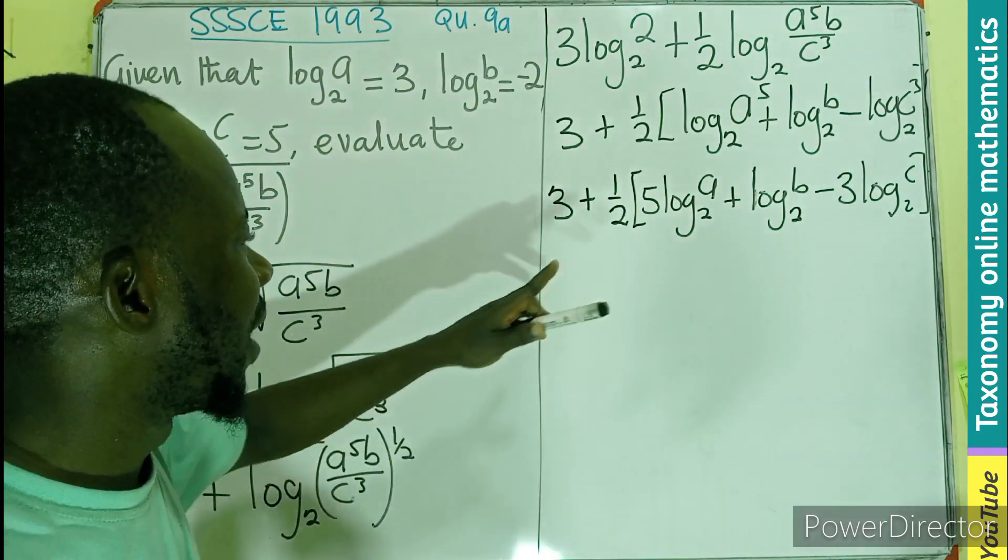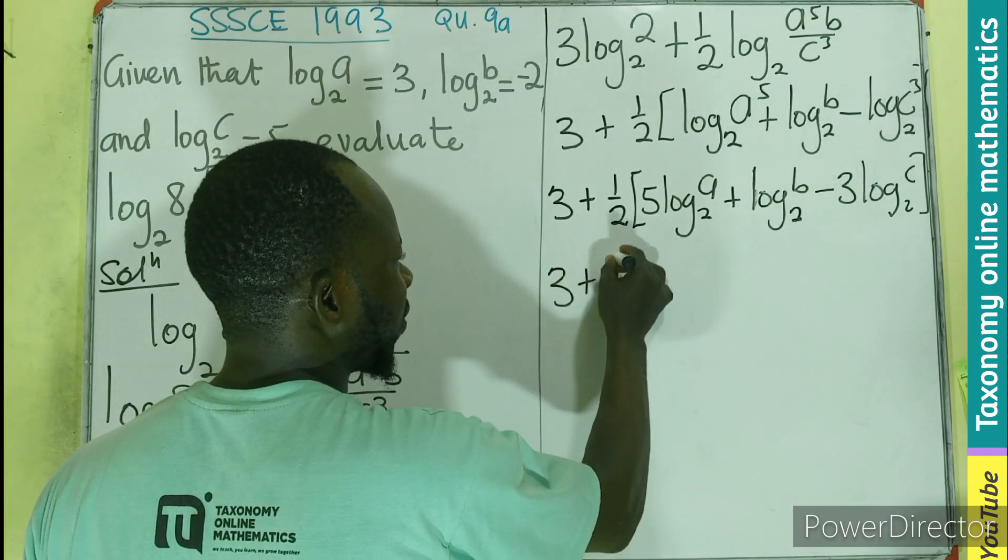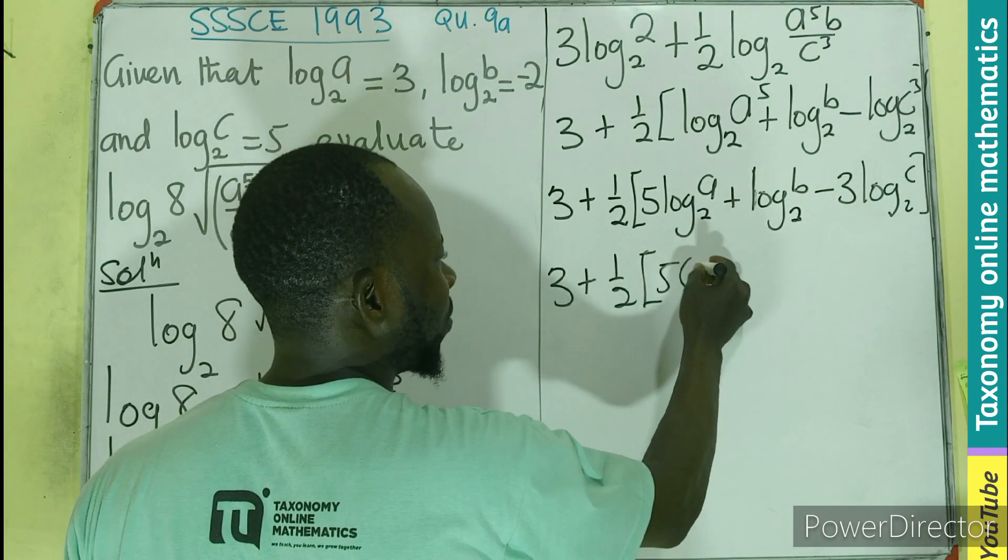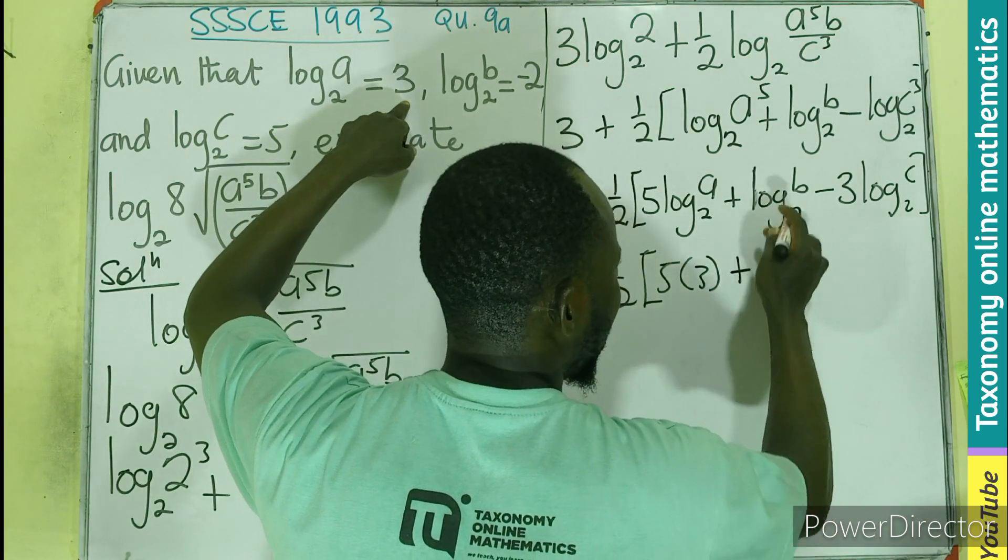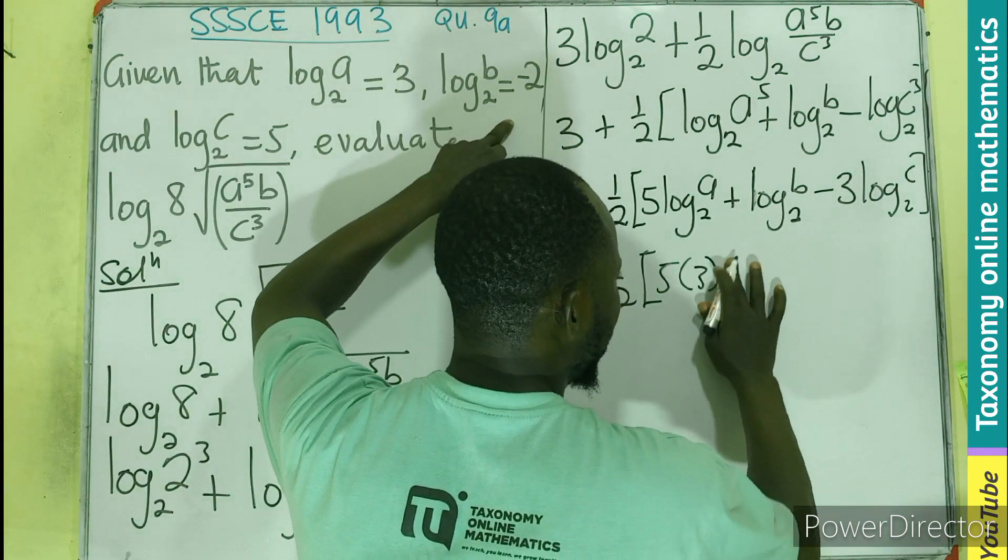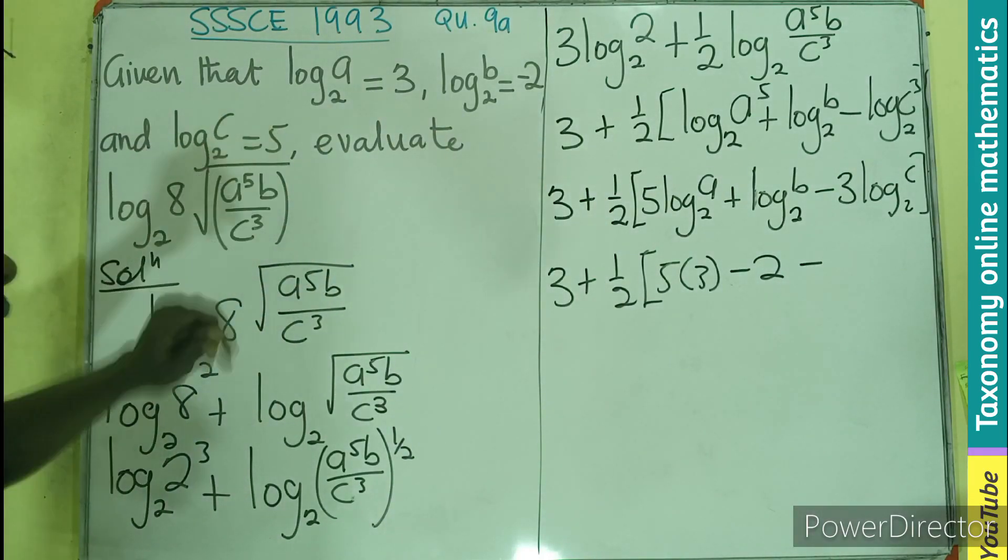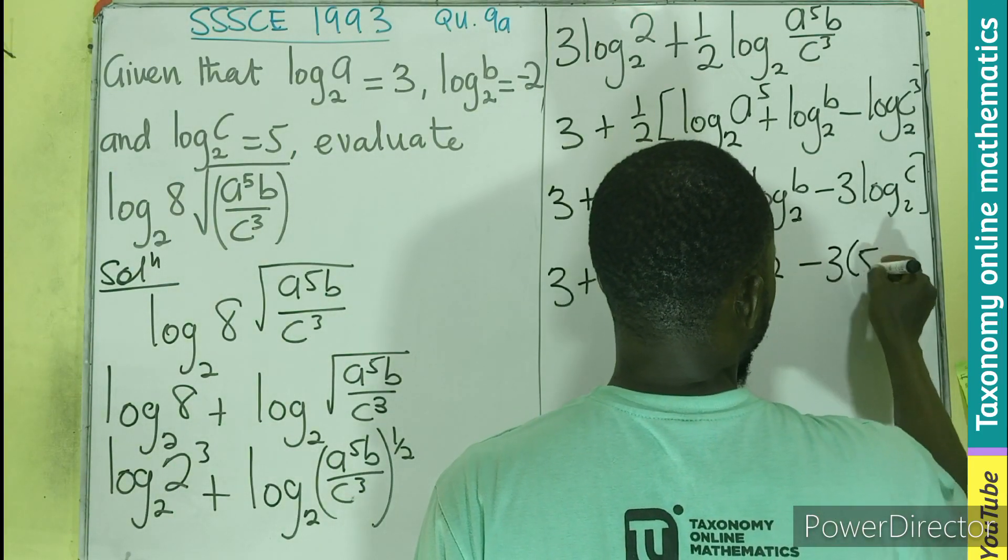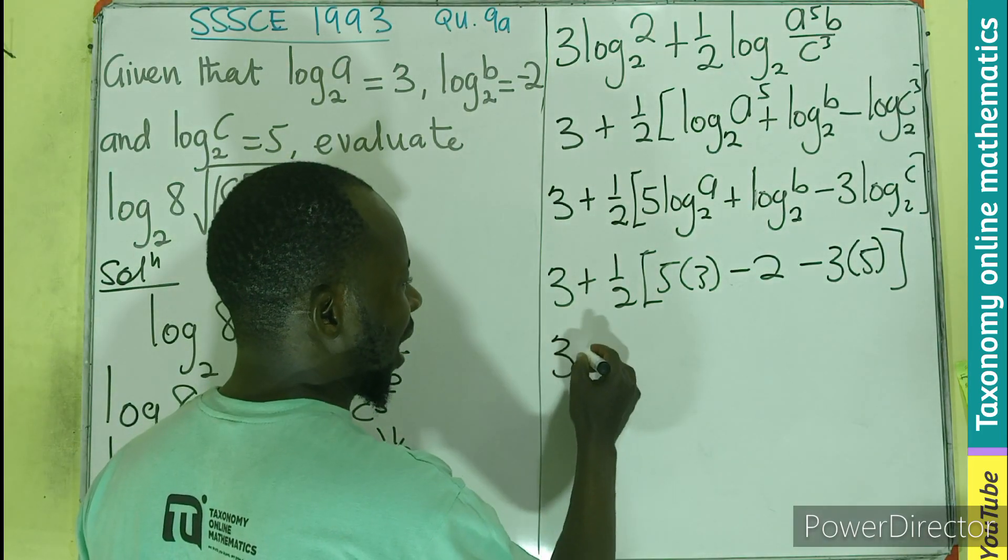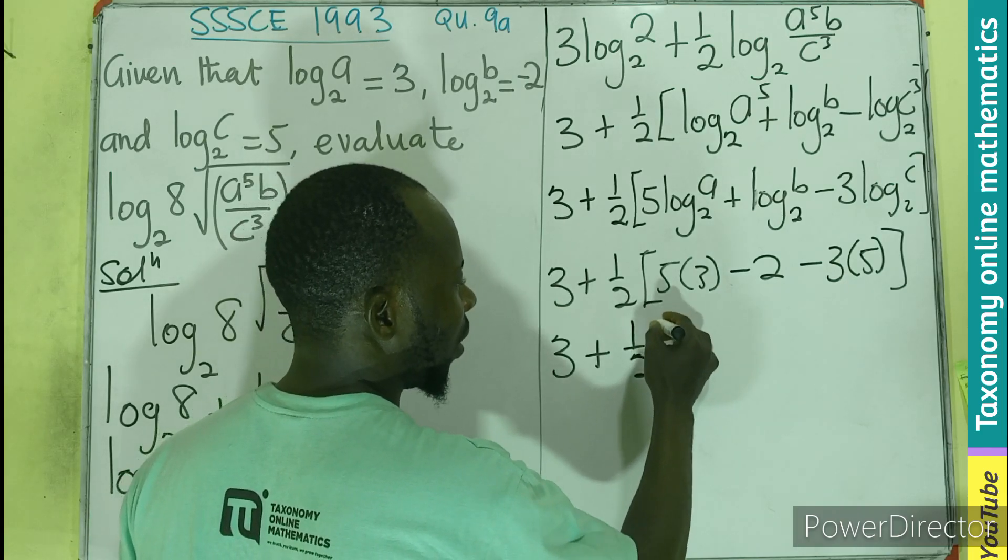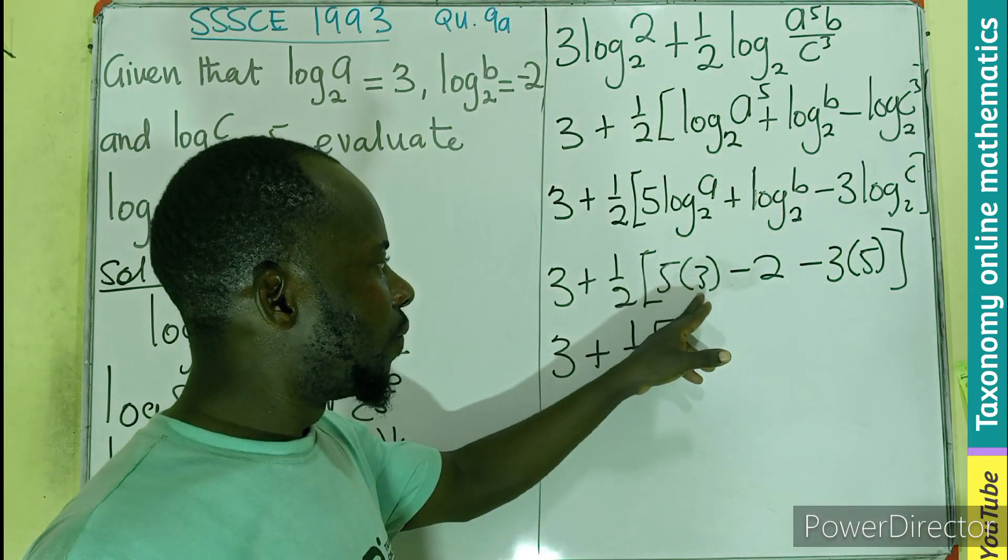Now we can do our substitution by saying that log A is 3. So this is going to be 3 plus half, multiplying 5 times 3. 5 is multiplying log A, which is 3. Then, we have plus log B, which is going to be negative 2, minus the log C is 5. So these 3 will be multiplying 5, all still multiplying our half. Let's maintain the half and see what happens in that bracket.